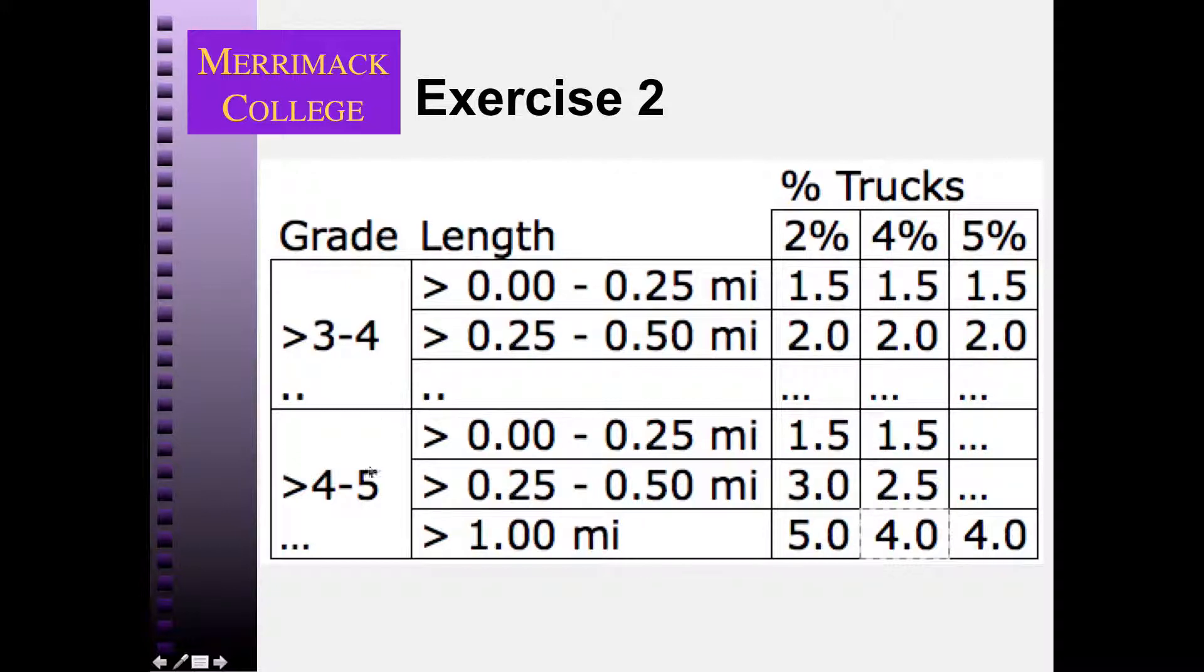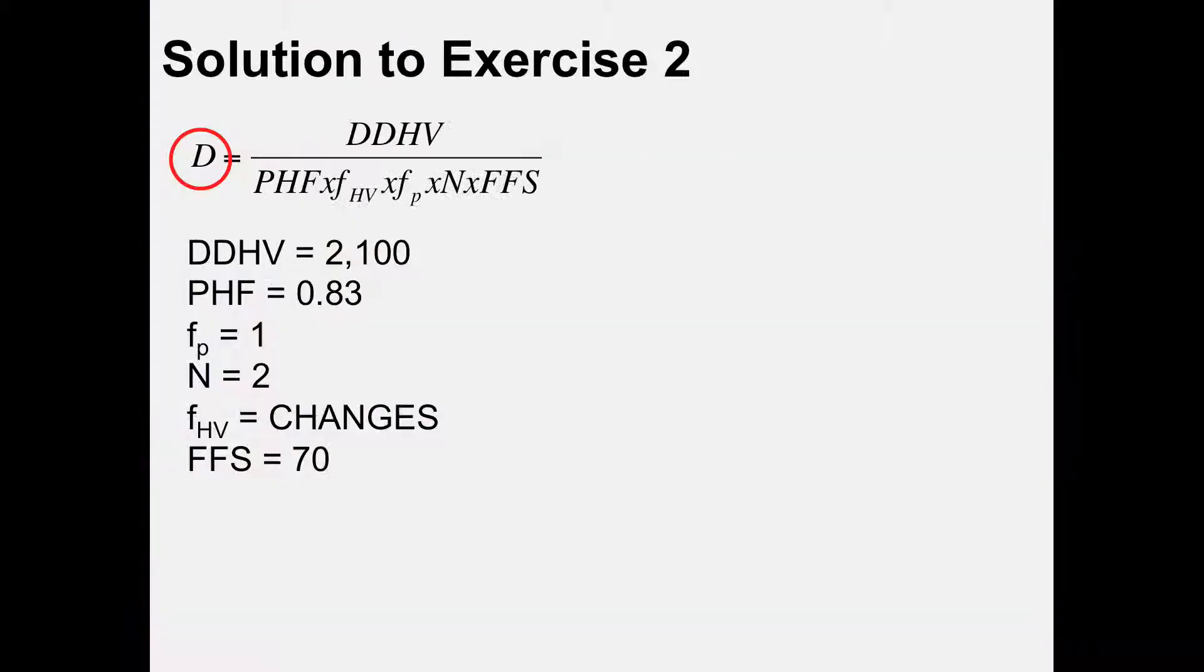And we have a 5% grade, so we're going to use this one. And it is two miles long, so it's more than a mile long. And I think it was 5% trucks, so we're here. And so the passenger car equivalents, the number of cars that we would replace one truck with to get the same performance in the mix is four.